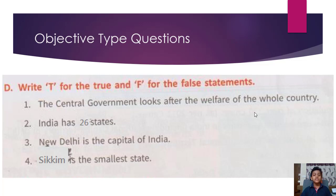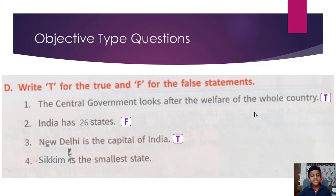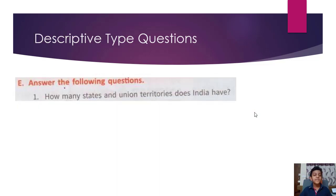Lakshadweep is the smallest union territory. Write T for true and F for false: The central government looks after the welfare of the whole country — True. India has 26 states — False. New Delhi is the capital of India — True. Sikkim is the smallest state — False.